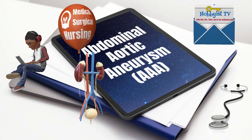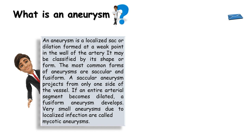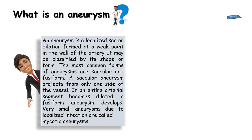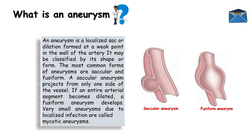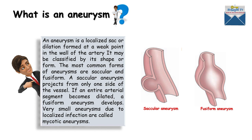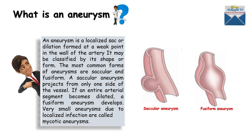First, let us define what is an aneurysm. An aneurysm is a localized sac or dilation formed at a weak point in the wall of an artery. It may be classified by its shape or form. The most common forms of aneurysms are saccular and fusiform. A saccular aneurysm projects from only one side of the vessel. If an entire arterial segment becomes dilated, a fusiform aneurysm develops. Very small aneurysms due to localized infection are called mycotic aneurysms.